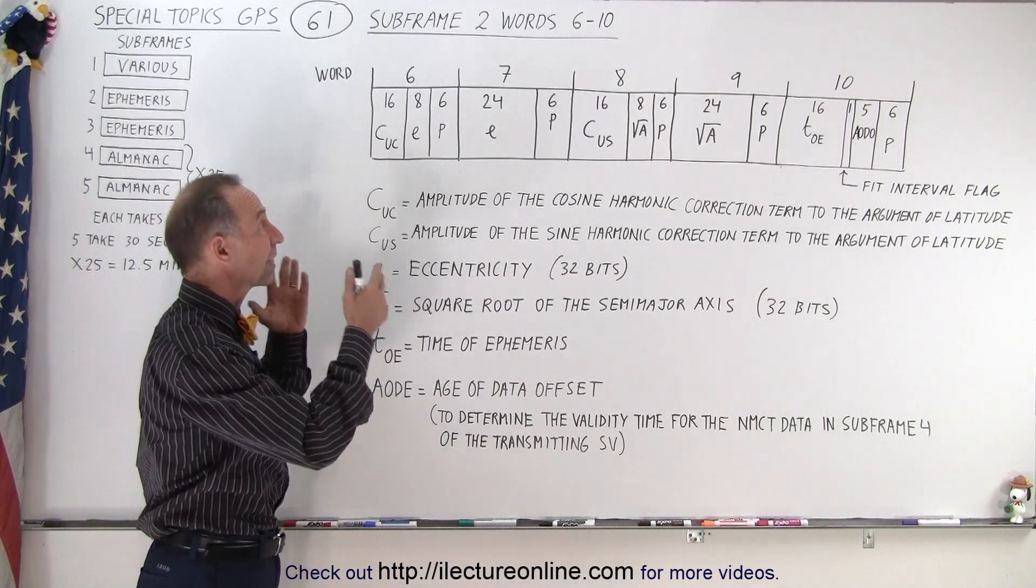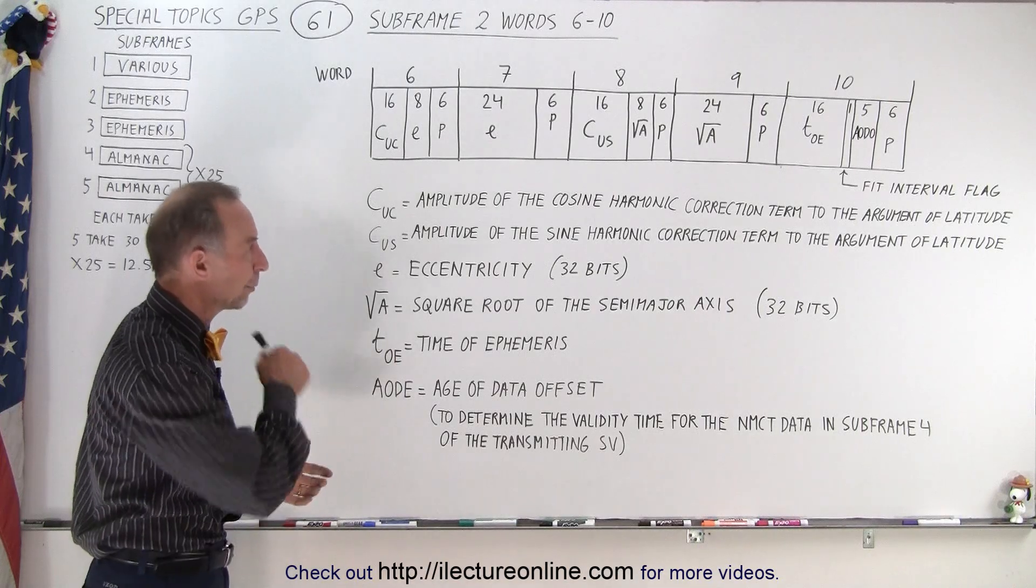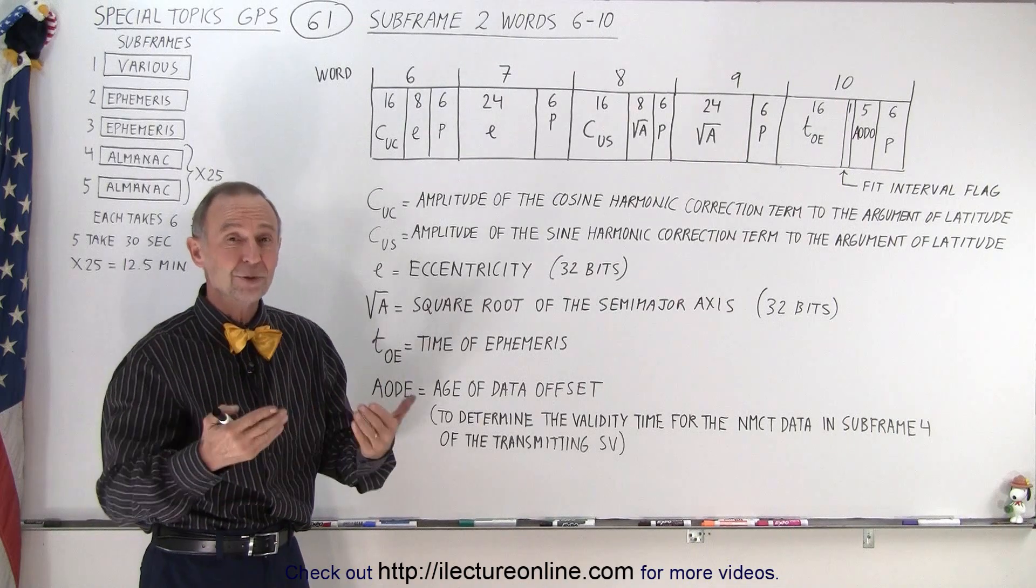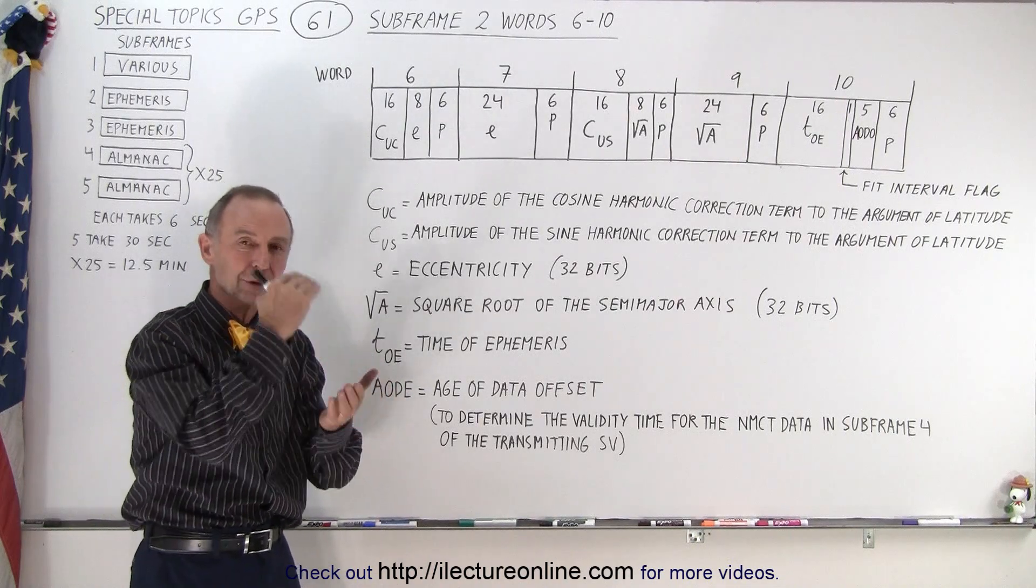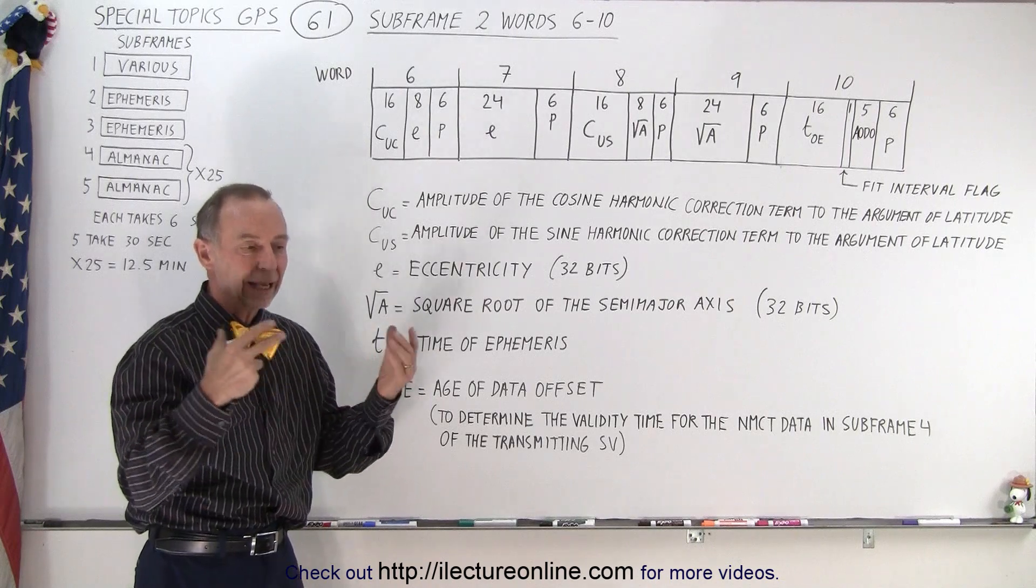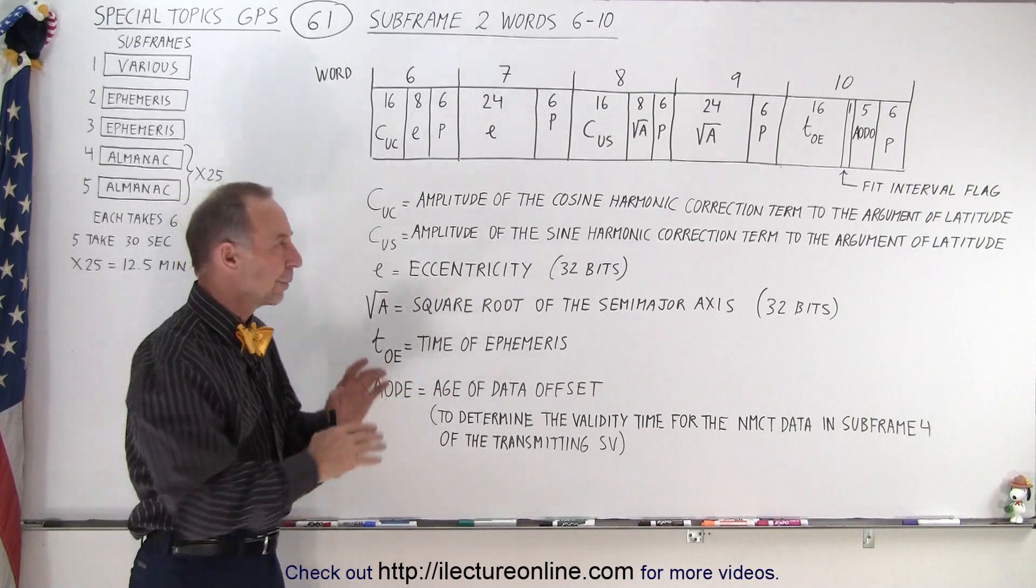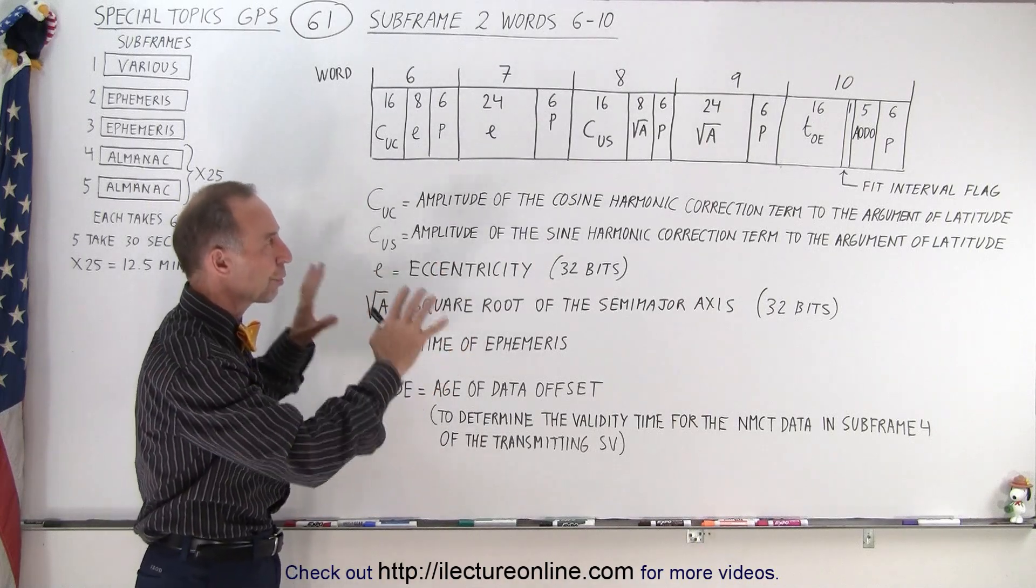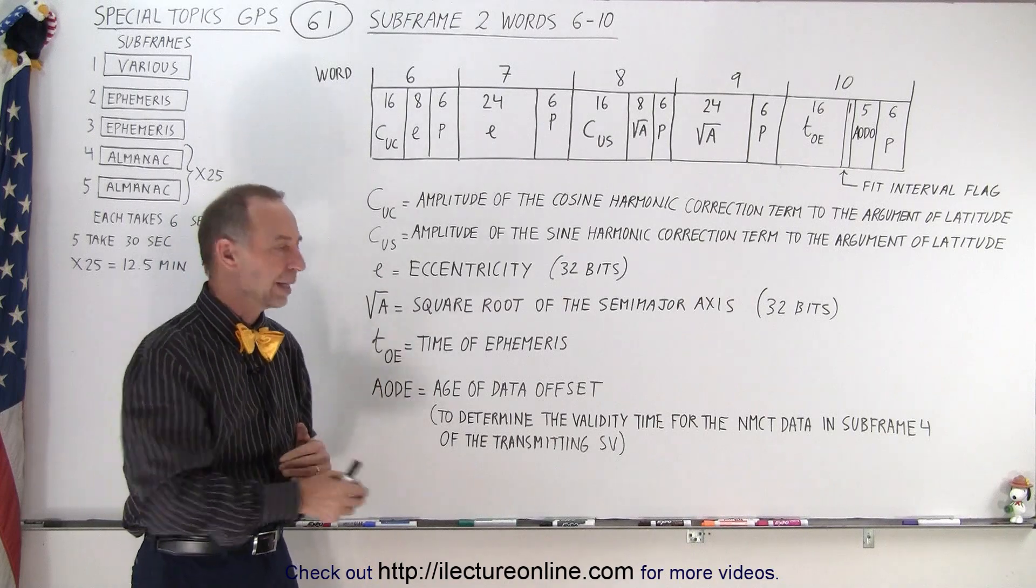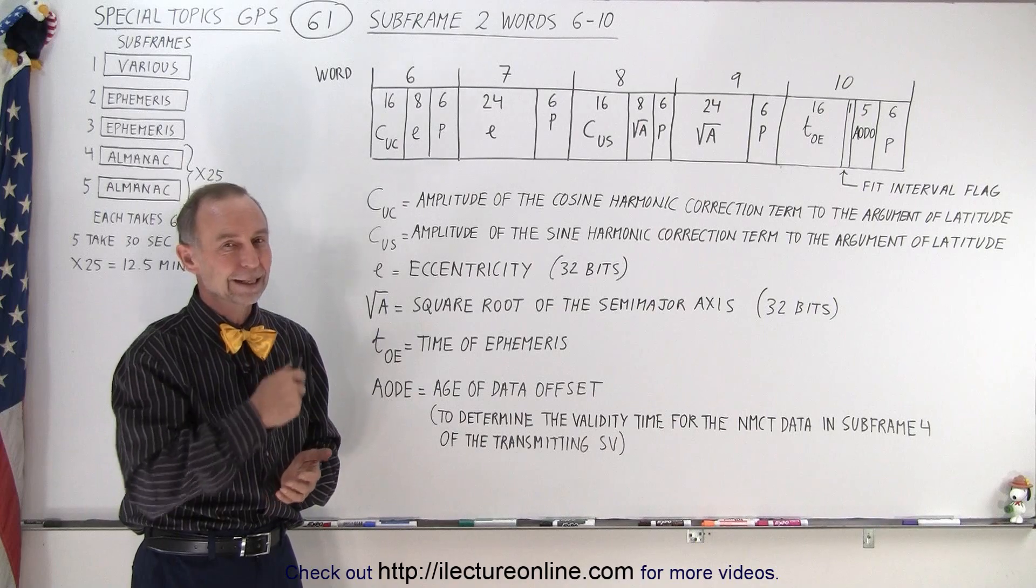That's the information contained in the second half of subframe 2. Now we're ready to go to subframe 3 to see what's contained in that—more ephemeris data. Later on, we're going to look at each particular item in the ephemeris data and examine the size, what it means, and what it's used for. Right now, we just want to get a general overview of where they're located, which subframe, how many bits it takes up, and at least the definitions of those various components. That is how it's done.